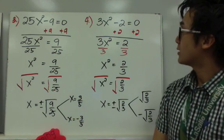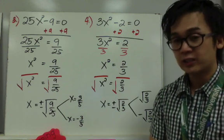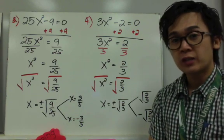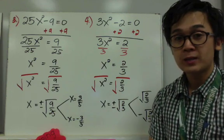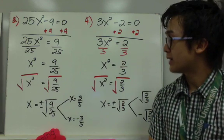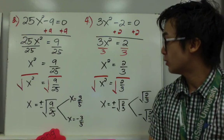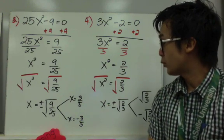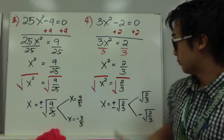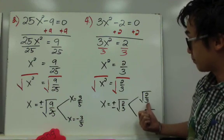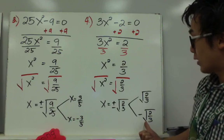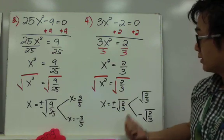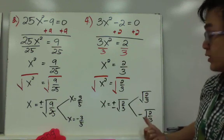For example number 4, we have 3x squared minus 2 equals 0. We add 2 on both sides to get 3x squared equals 2, then divide both sides by 3 to get x squared equals 2 over 3. Taking the square root of both sides, x equals plus or minus the square root of 2 over 3. Since 2 and 3 are prime numbers, we cannot simplify the square root further. So the answers remain x equals square root of 2 over 3 and x equals negative square root of 2 over 3.